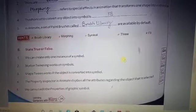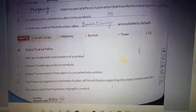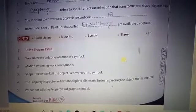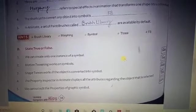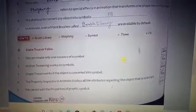Motion tween works on symbols. Shape tween works if the object is converted into symbol. It is false. Shape tween works when you have designed a shape and one object is converted into another object, not into a symbol.